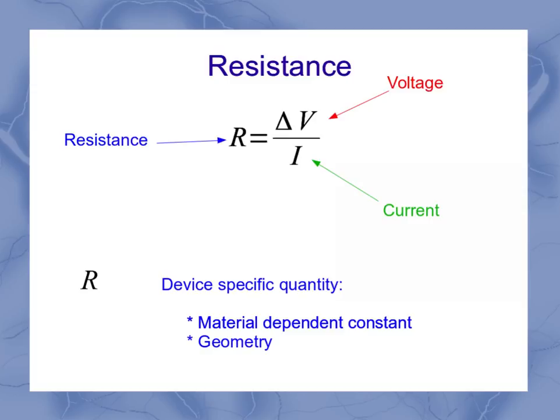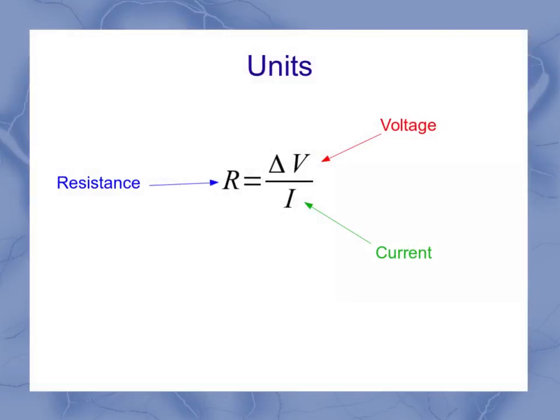But coming back to just this resistance equation, I can start looking at the units. We know that voltage has a unit of volt, and current has a unit of amp. So that means resistance, according to Ohm's law, should be equal to a volt per amp.